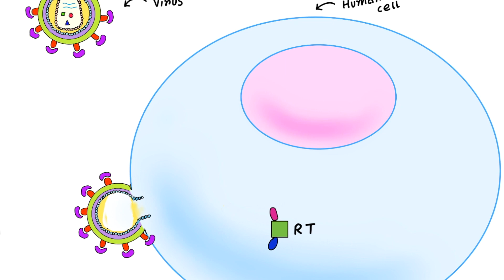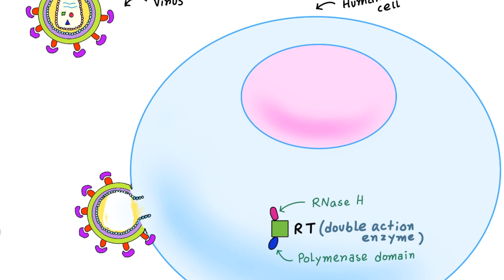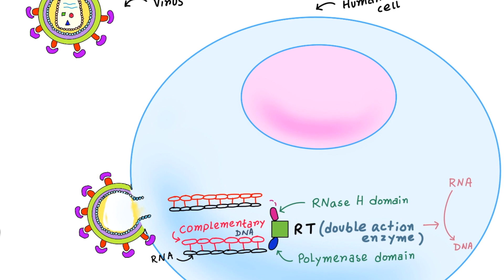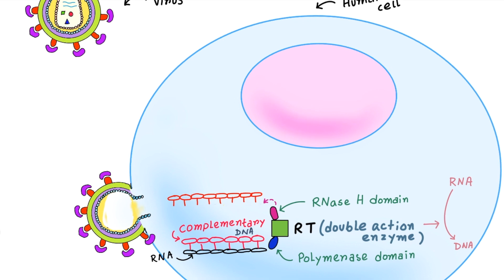The first enzyme to come into action is reverse transcriptase, which is a double-action enzyme with two functional domains: a polymerase domain and an RNase H domain. It is called reverse transcriptase because it generates complementary DNA from an RNA template — a process called reverse transcription. The polymerase domain reads the RNA and makes complementary DNA by adding nucleotides one by one. Then the RNase H domain destroys the original RNA template, leaving a single-stranded DNA.